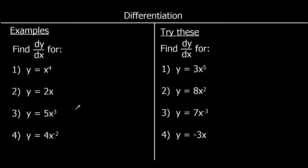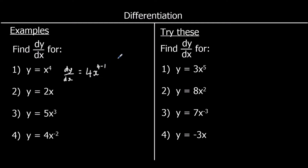Here are some examples. We've got y equals x to the power of 4; we're going to find dy/dx, the gradient function. dy/dx can be found by timesing by the power: 4 times x to the power of 4 gives 4x to the power of 4, but then we take one off the power, so it's 4x cubed.